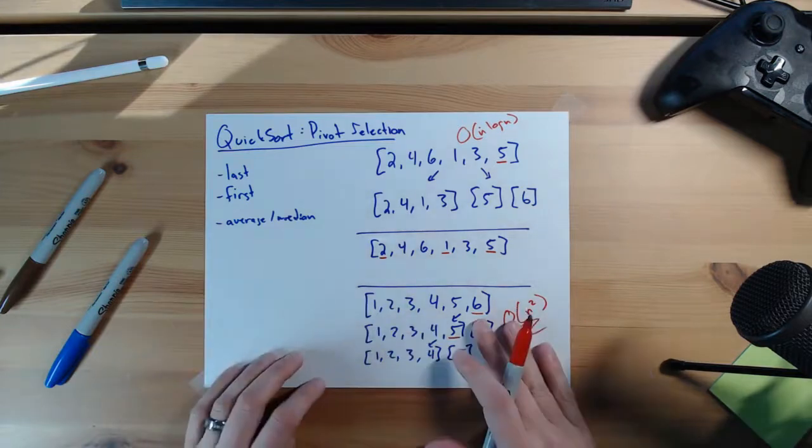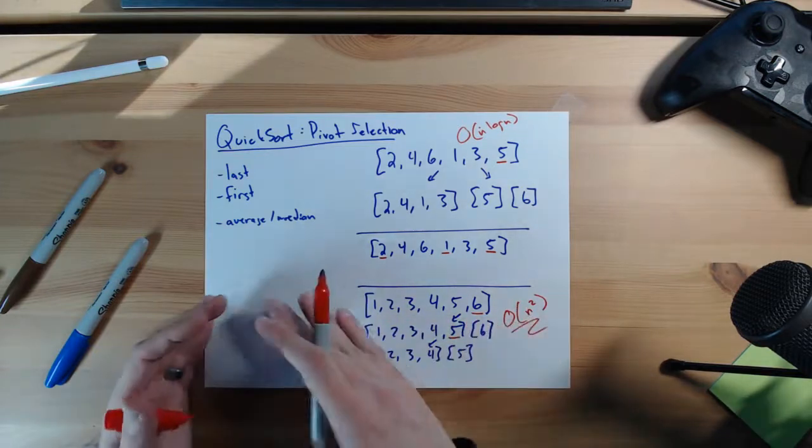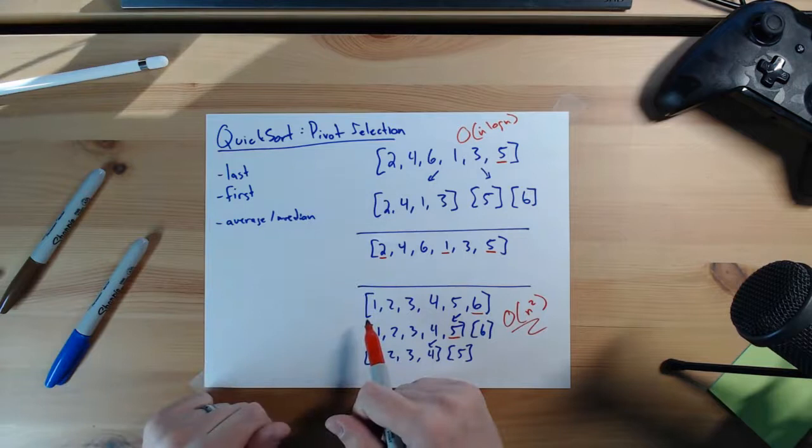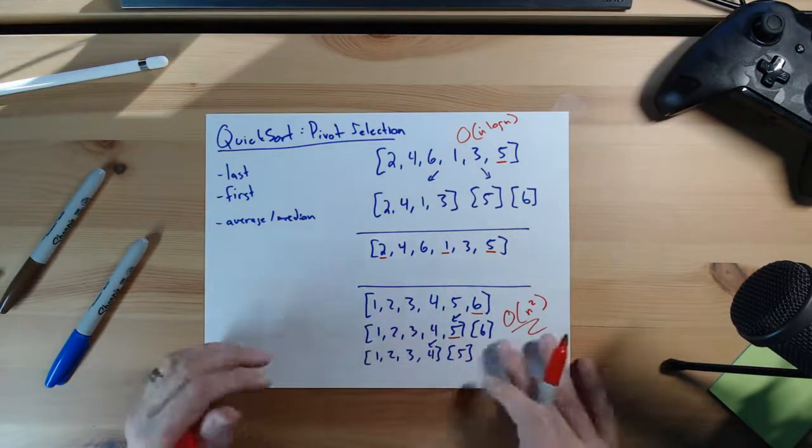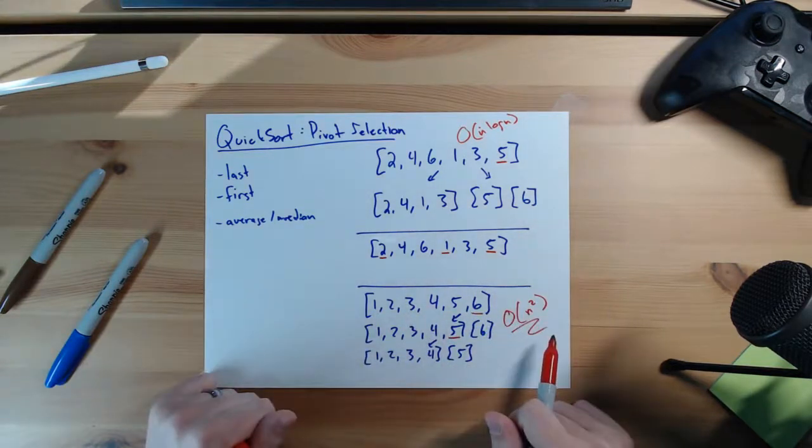In general, if your array's already sorted, ideally don't call quicksort on it again. We never know that for sure. So we just kind of do our best to sort of avoid this situation.